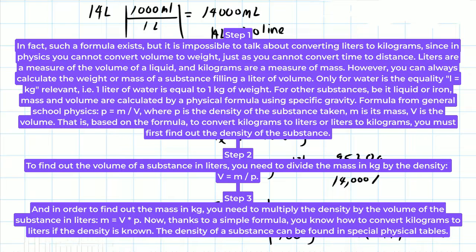Step 2. To find out the volume of a substance in liters, you need to divide the mass in kg by the density: v equals m slash p.